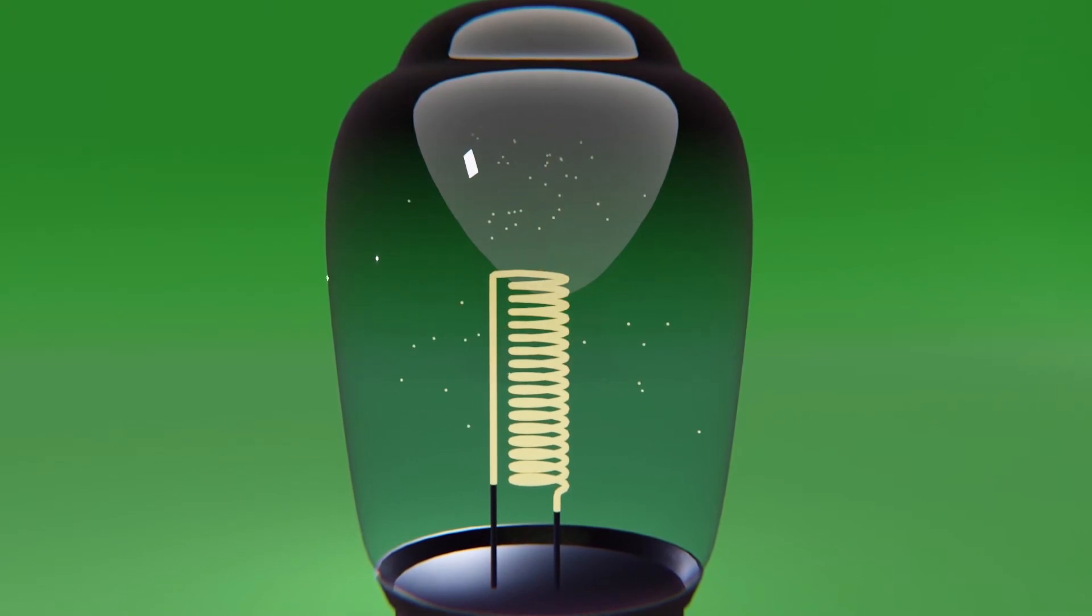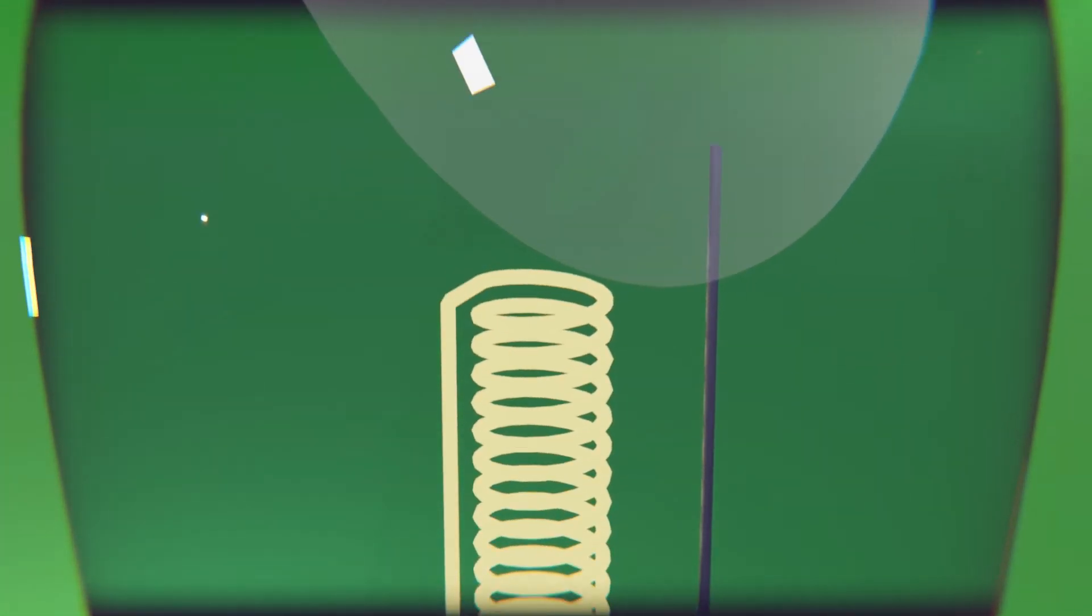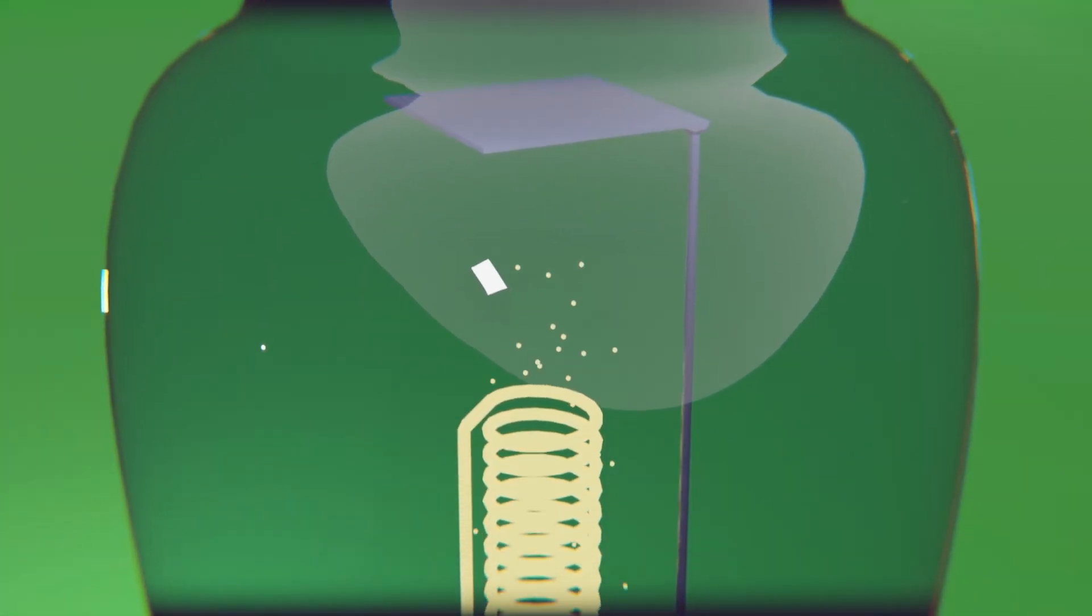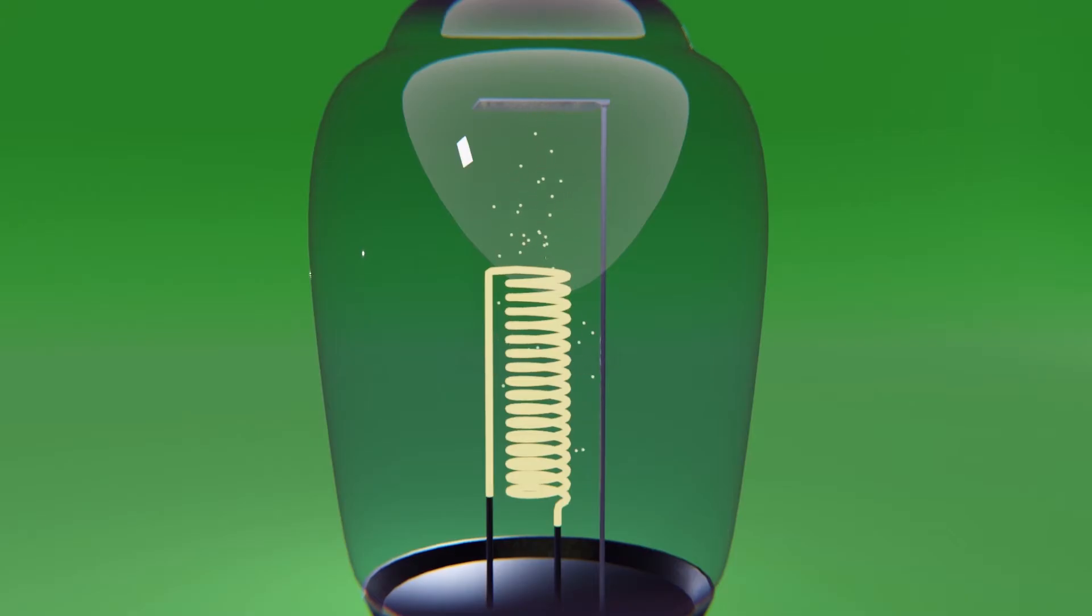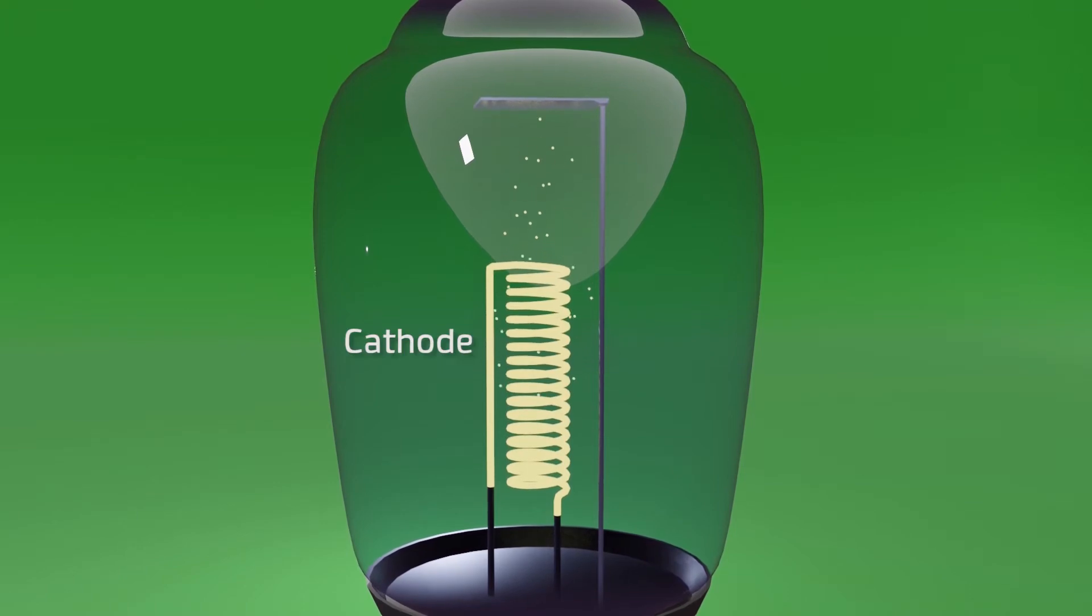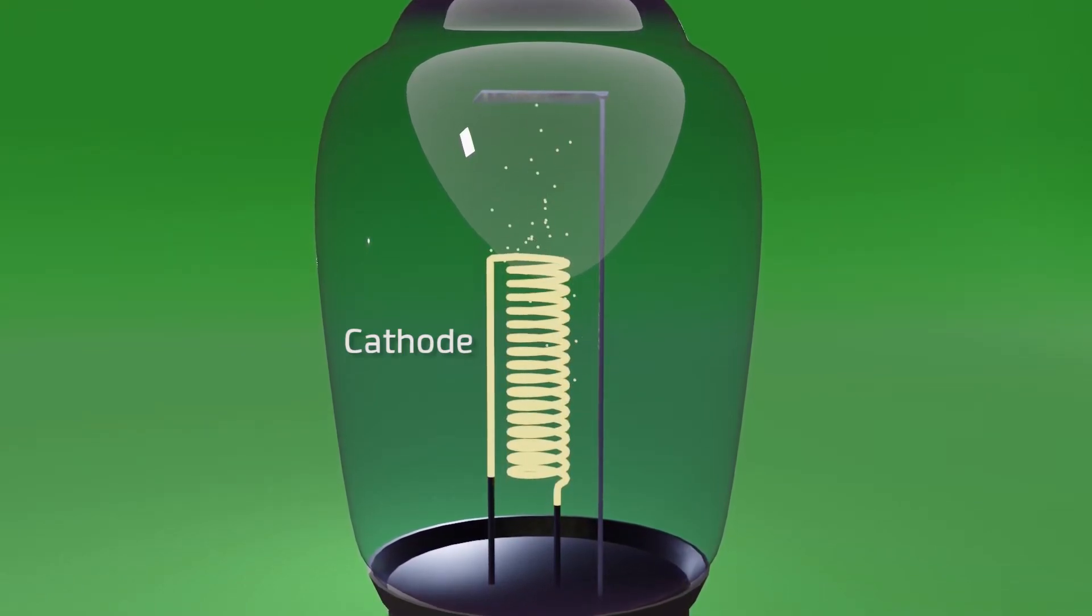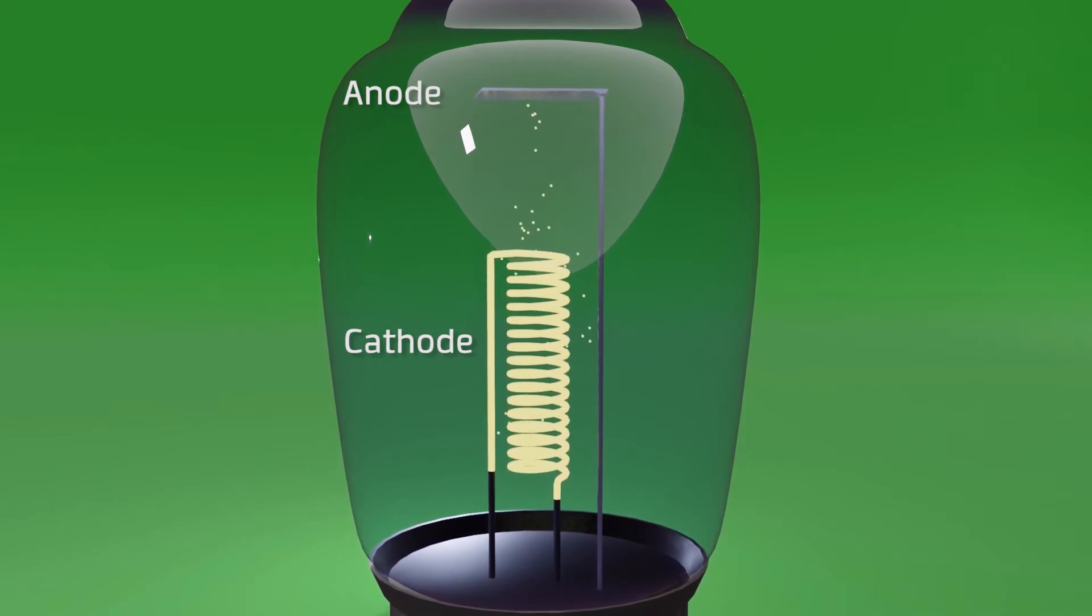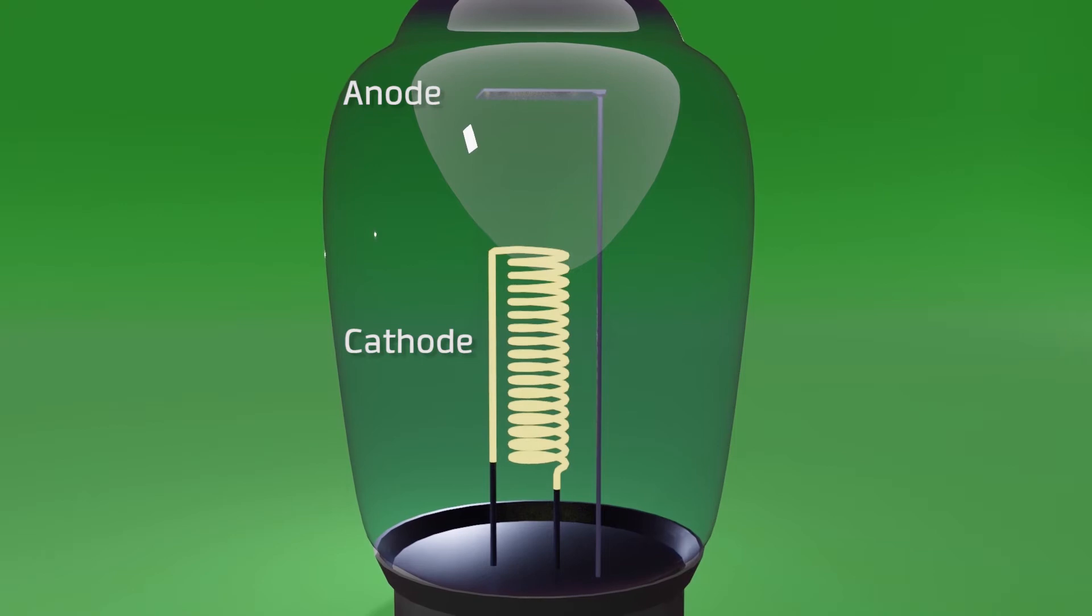And by trying different alternatives he realized that if he put inside a positively charged metal plate, the dark material was deposited only on this plate and not on the glass of the bulb. In this configuration, since the filament was releasing electrons, we will call it a cathode, while on the other hand, as the plate was receiving electrons, we will call it anode. In this way, by having a cathode and an anode, the assembly was known as a diode.